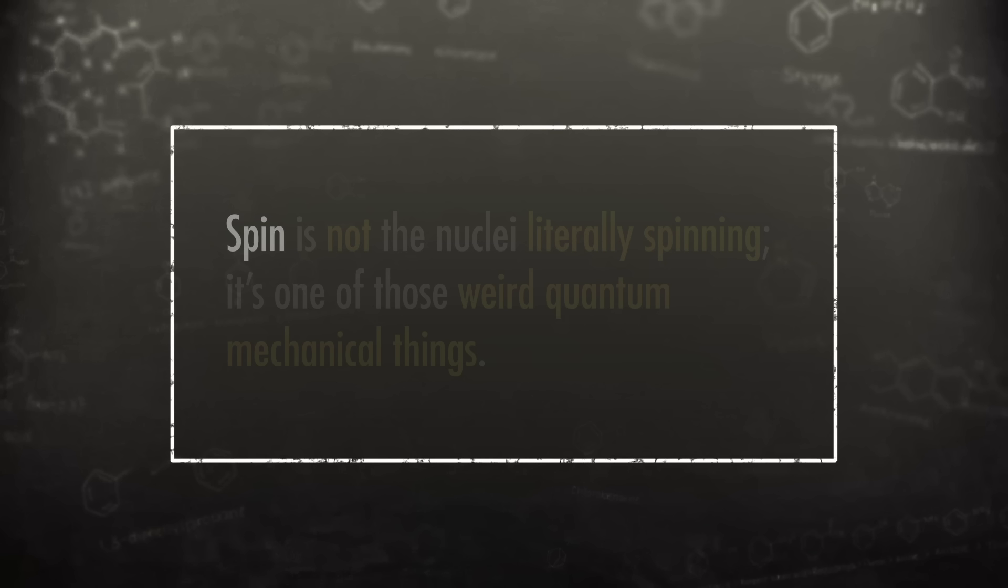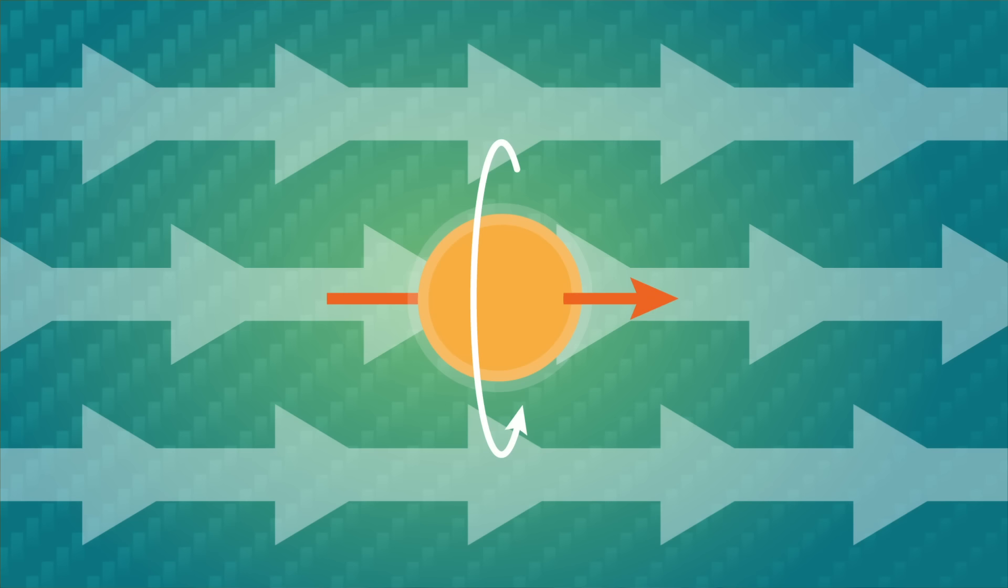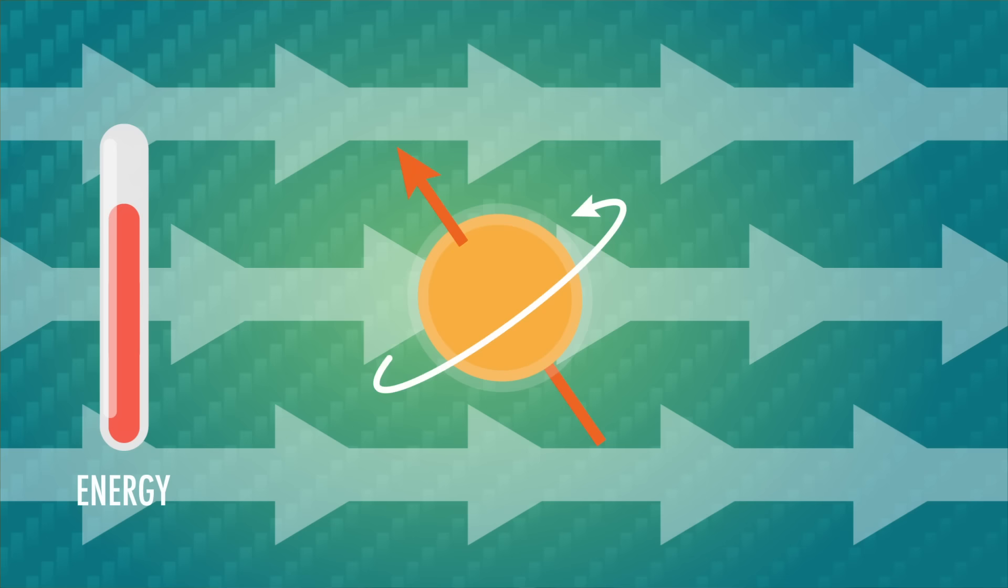Spin is not the nuclei literally spinning. It's one of those weird quantum mechanical things. To avoid getting too into the physics, we'll just say that when charged particles, like protons in a nucleus, move, a magnetic field with a magnetic moment is created. If you've played with iron filings before, you know they move if you put a magnet near them. Each iron filing has a magnetic moment, and under normal circumstances, their directions are random. However, in the presence of a magnet, which has a magnetic field, they all line up. Similarly, if you stick a nucleus with a magnetic moment in an external magnetic field, it either lines up with that field or exactly against it. It takes less energy to align with the magnetic field and more energy to go against it, so there's a clear energy difference between the two different spin states.